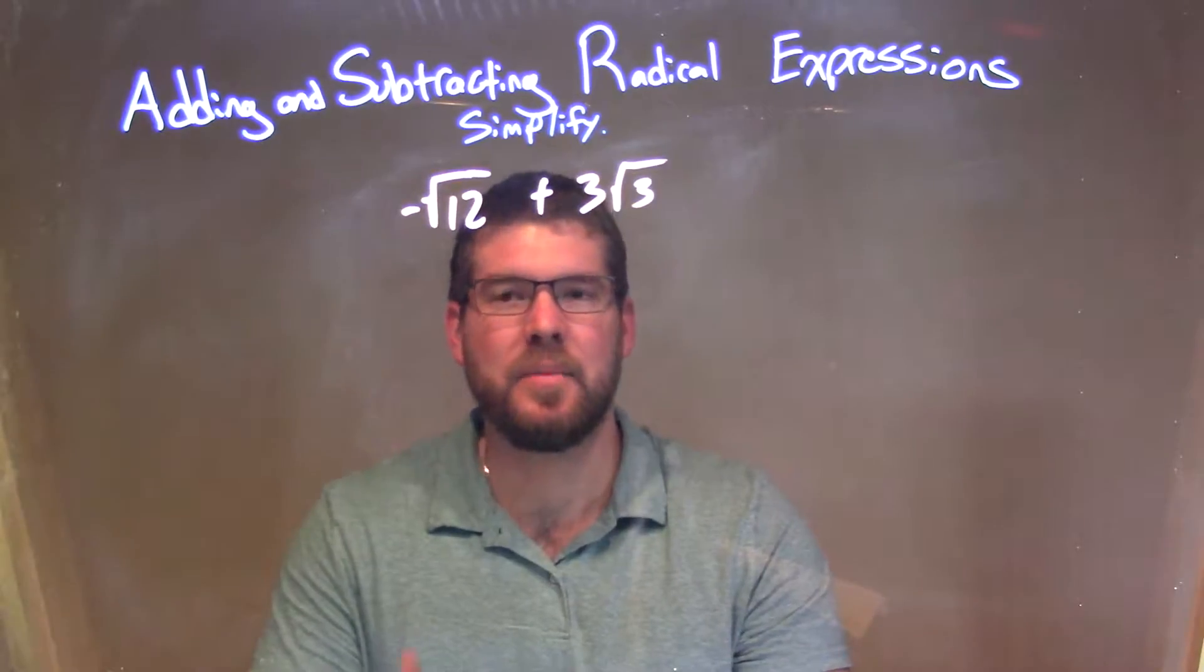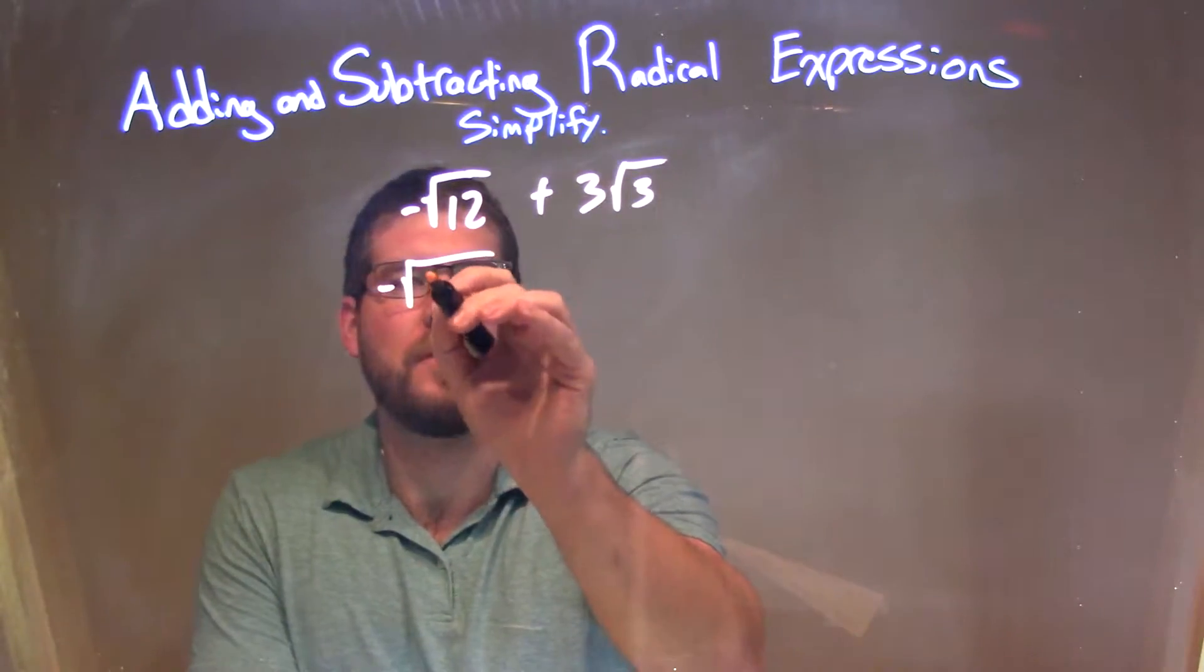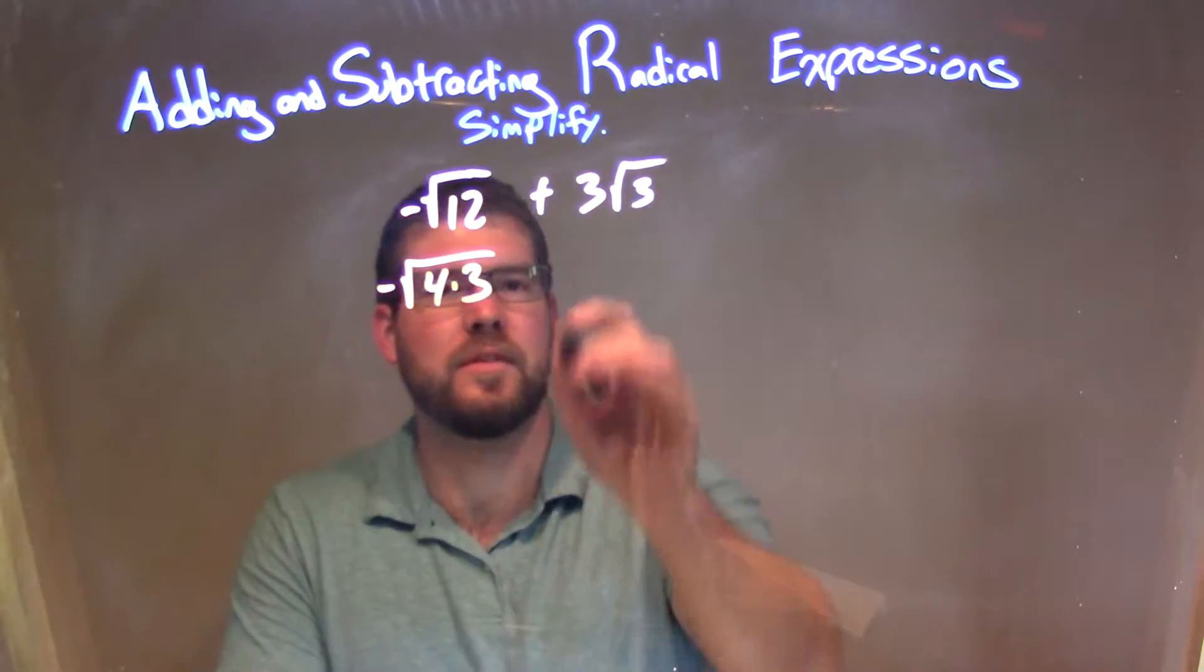Luckily, I know 12 is the same thing as 4 times 3, so I'm going to take a negative here and write 4 times 3, so the square root of 4 times 3 instead of 12.